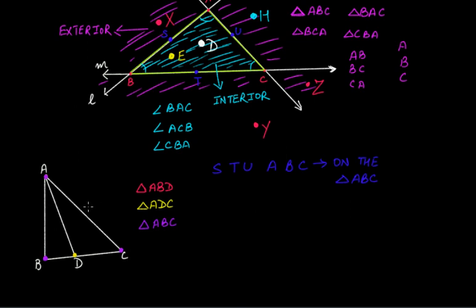So this is the way to find how many triangles are in a given figure. You have to look at the figure carefully and find how many triangles are possible using three points, where those three points act as vertices of the given triangle.